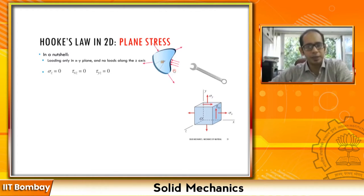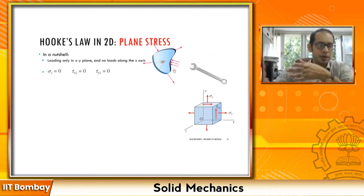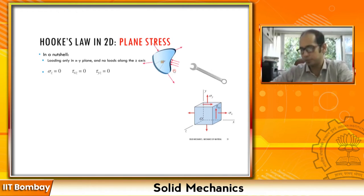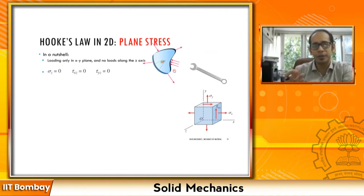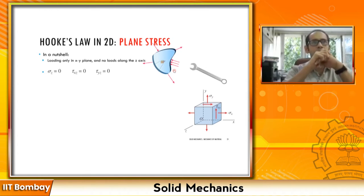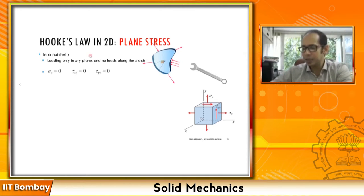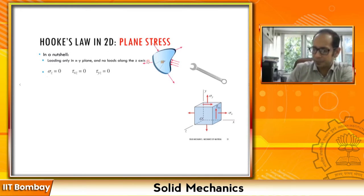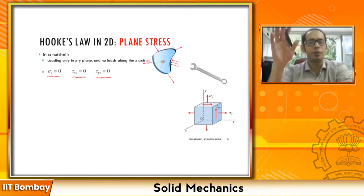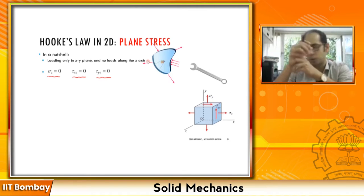This means that if there are no forces along the z direction, some stresses automatically vanish, because stresses are related to forces. For example, in the bottle and ring examples, you are not applying any shear or normal force in the z direction. So sigma z, tau xz, and tau yz — any stress component involving z — essentially vanishes.